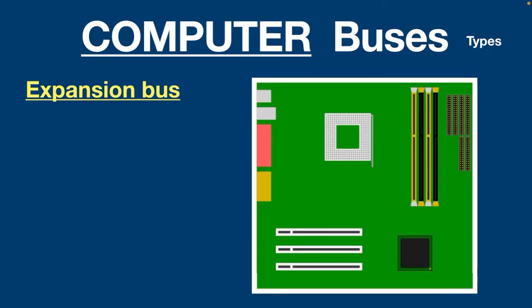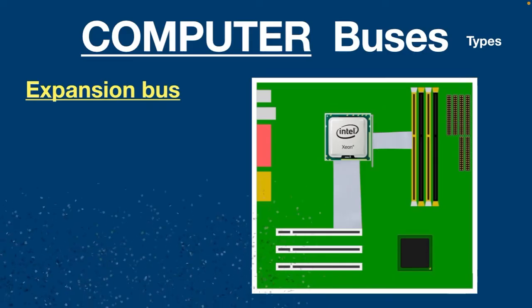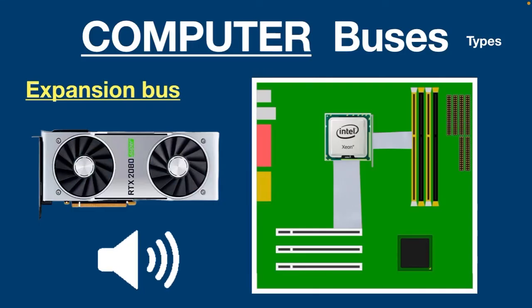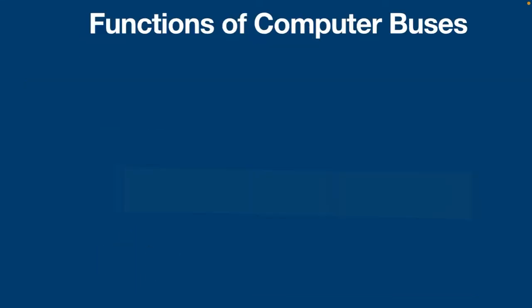Finally, the expansion bus is a group of wires used to connect with the expansion slots on the motherboard. The expansion bus connects important internal system components like the CPU to PCI or PCI Express slots on the motherboard. PCI and PCI Express slots are used to connect add-on cards like graphic cards and sound cards to enhance system performance.